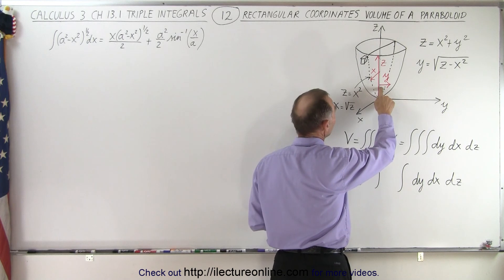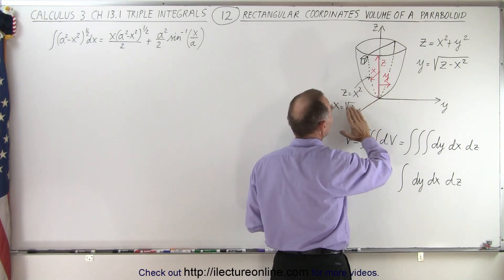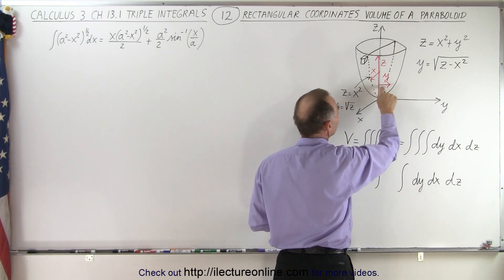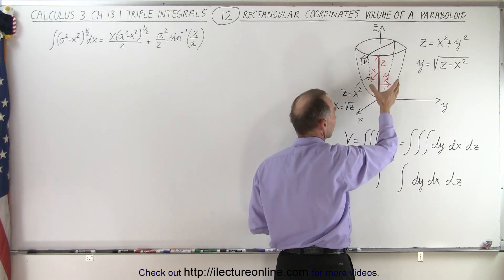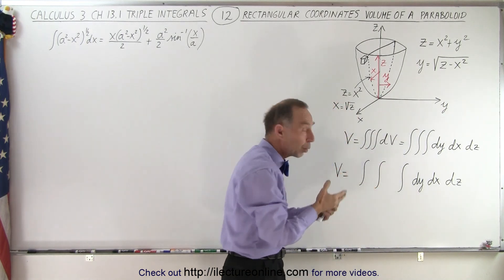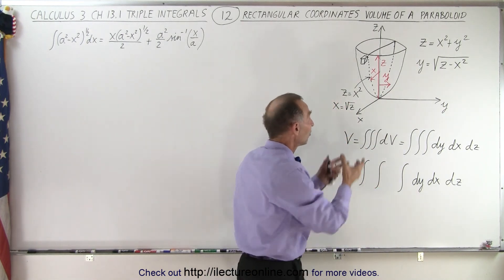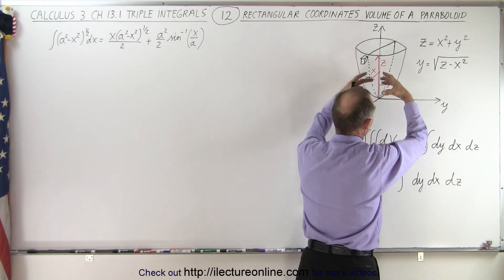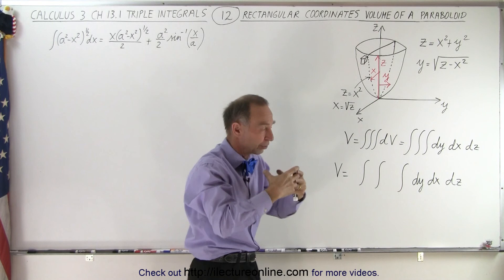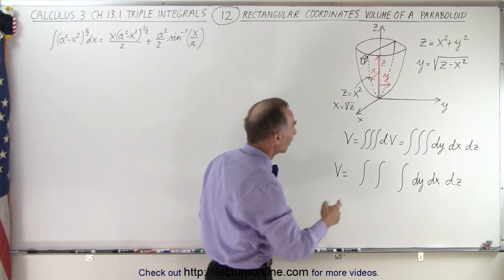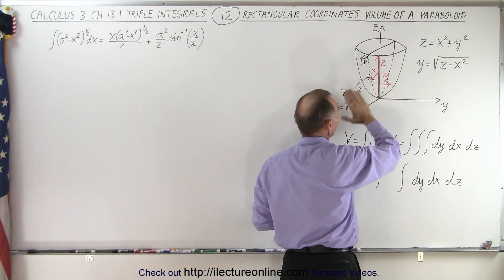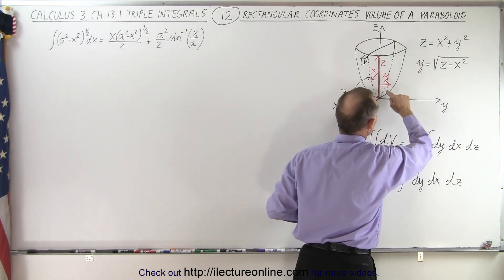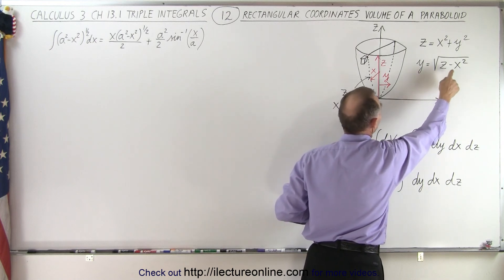Notice when we integrate in the y direction if we start from the xz plane and we go out eventually we will hit the surface of that paraboloid, and that surface will depend upon the values of both z and x since the paraboloid is defined as z equals x squared plus y squared because it's a circular paraboloid like that. Then we realize that the value for y from the xz plane outward in the y direction will depend upon both z and x.